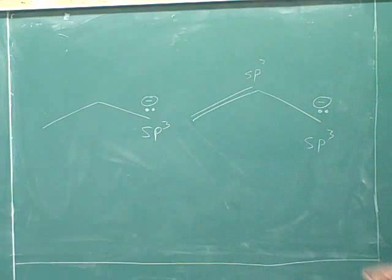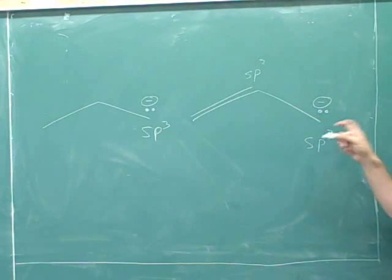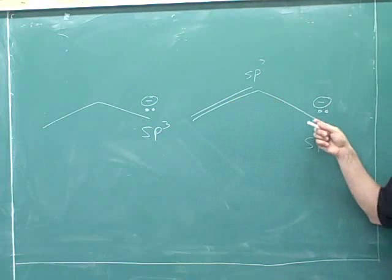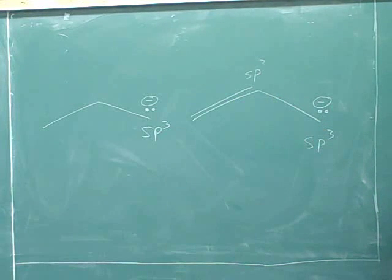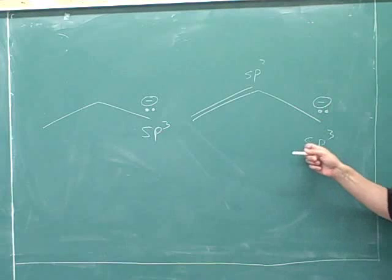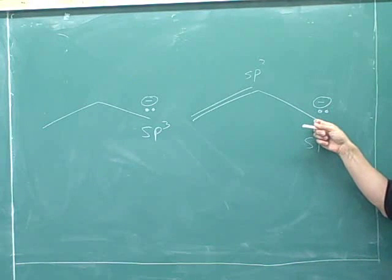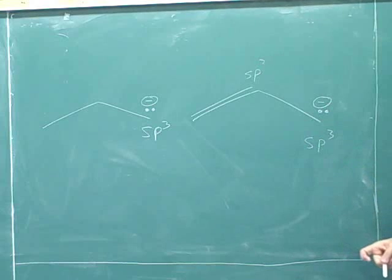Just suppose for a second that this carbon was sp3 hybridized. It's not. But just suppose for a second this is sp3 hybridized. Well, then would this molecule be conjugated? Well, no. It wouldn't. Because remember that when you're sp3 hybridized, you don't have any p orbitals. There would be no p orbitals here. So we would not have overlap of p orbitals at three or more atoms.